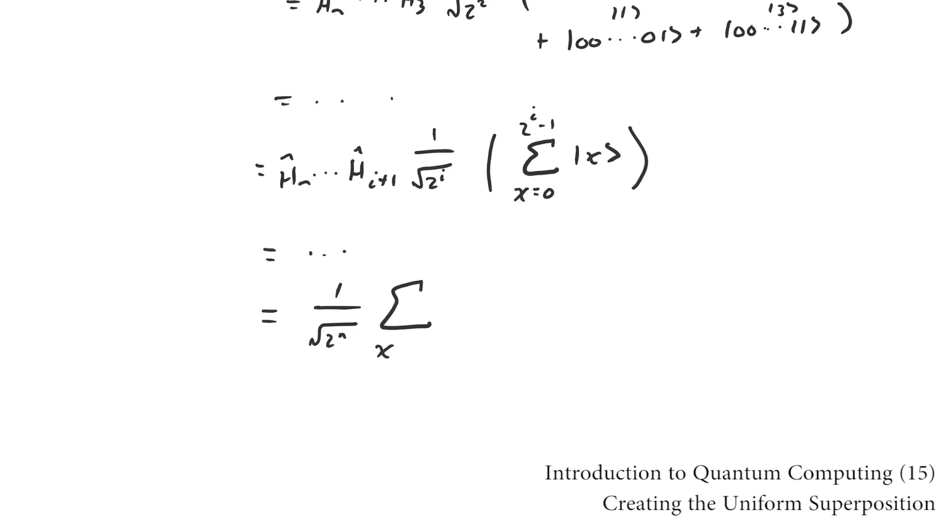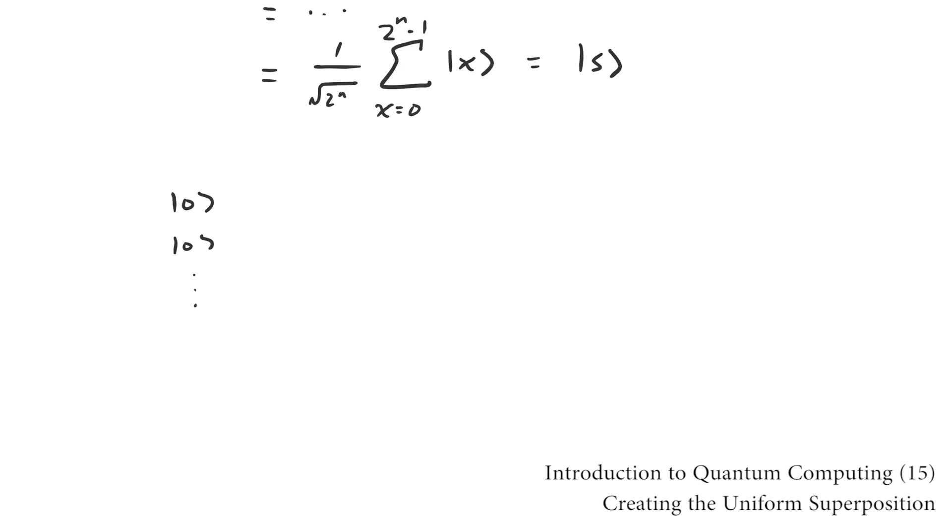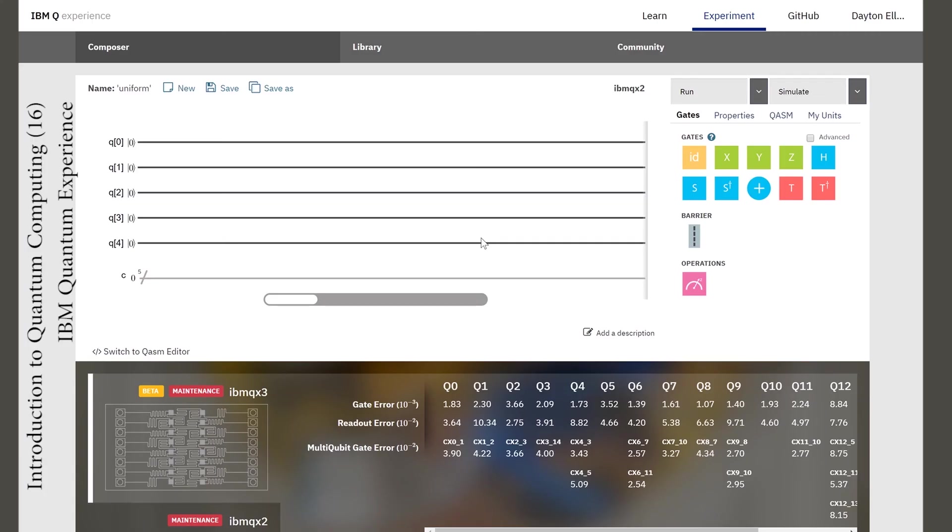Actually implementing these programs on real quantum computers is very similar to drawing the sketches we've been drawing. I'll use IBM's quantum experience to illustrate. To create the uniform superposition, we drag and drop a Hadamard gate in front of each of the five qubits followed by a measurement to confirm that this really did create the uniform superposition.